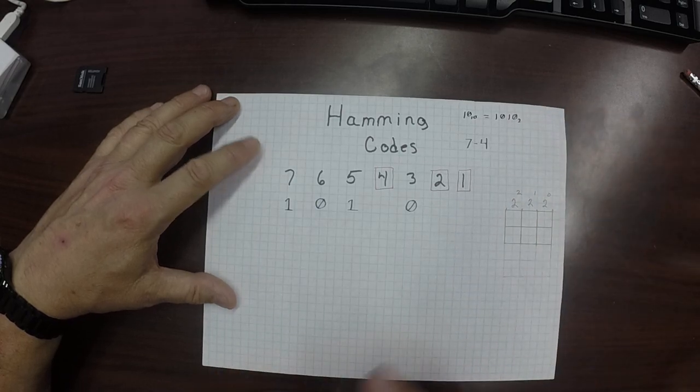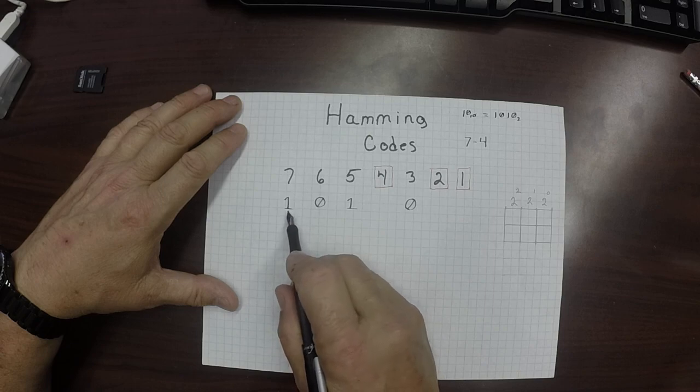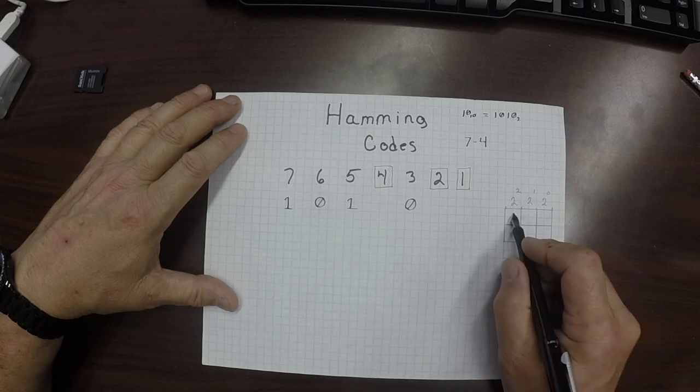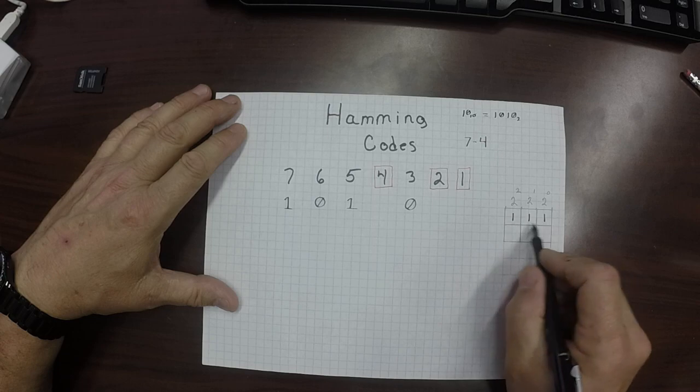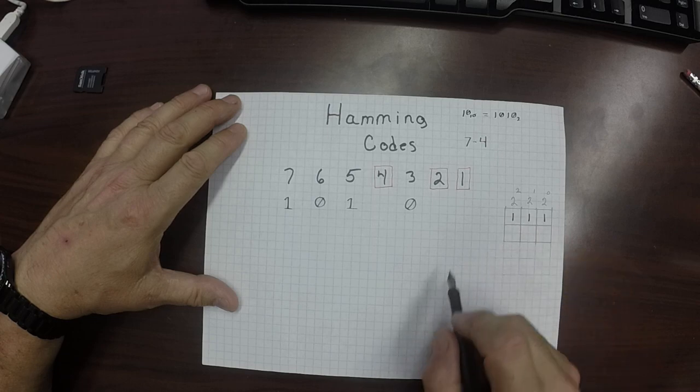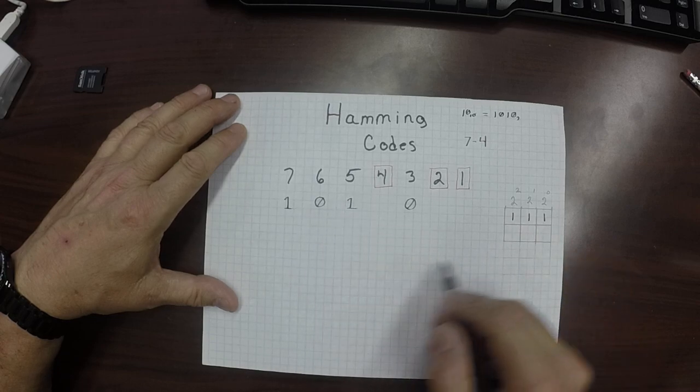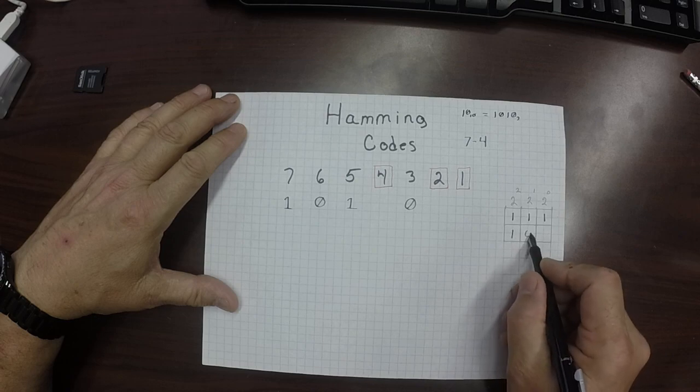So now we observe that there is a 1 in the 7 position. So I'll put 1, 1, 1, 1. That's the binary value for 7. And there is a 1 in the 5 bit: 1, 0, 1.